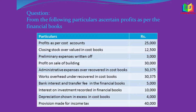From the following particulars, ascertain profit as per the financial book. Profit as per cost account: 25,000. Closing stock overvalued in cost book: 12,500. Preliminary expenses written off: 3,000. Profit on sale of building: 30,000. Administrative expenses over-recorded in cost book: 50,375. Works overhead under-recovered in cost book: 30,375. Bank interest and transfer fee in the financial book: 5,000. Interest on investment recorded in financial book: 10,000. Depreciation shown in excess in cost book: 4,000. Provision made for income tax: 40,000.